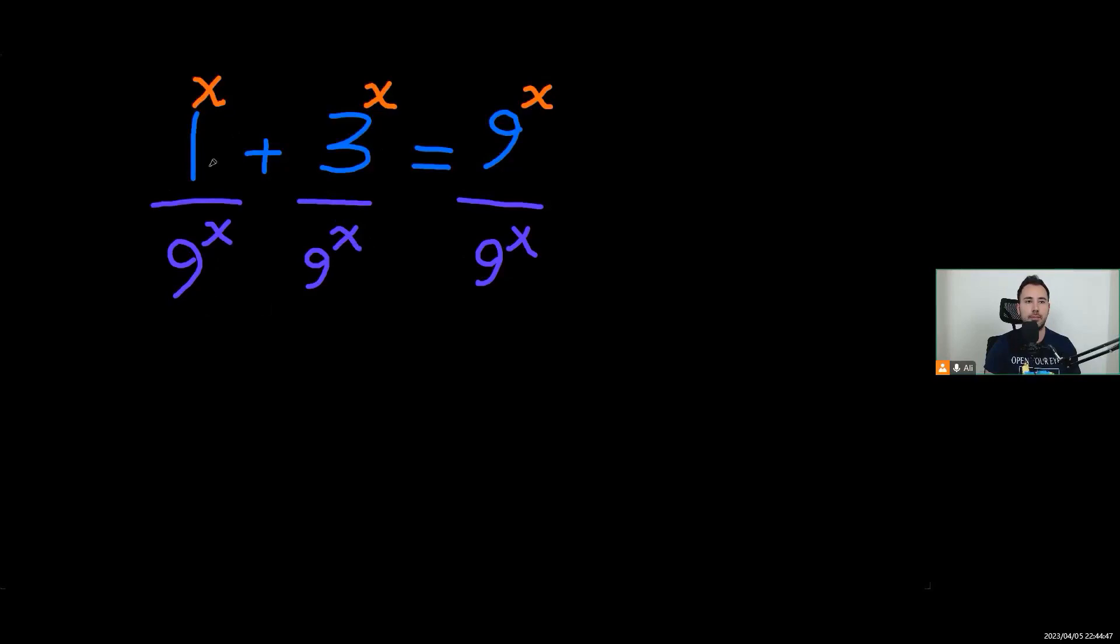So we're dividing these. The powers x and x are the same, so I could write it as 1 over 9 to power of x, plus 3 over 9. I'm going to write it as 1 over 3 to power of x, and of course the last term will be just 1.